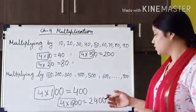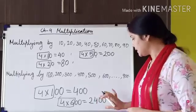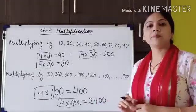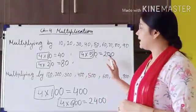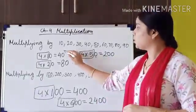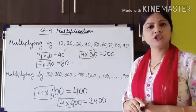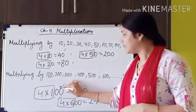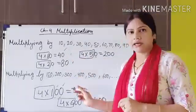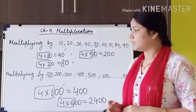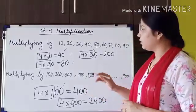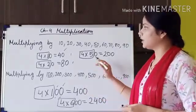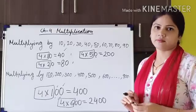This is the way to find the product when 0 is placed at both the 1's position and the 10's position. Write this example also in your maths copy.